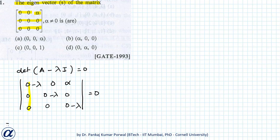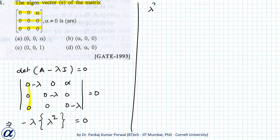the value of the determinant becomes minus lambda times lambda squared equals zero. This gives us lambda cubed equals zero, meaning lambda equals zero. To be precise, all three roots of this cubic equation are zero.